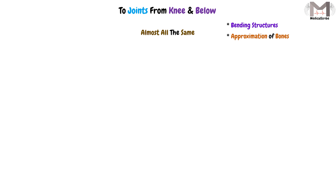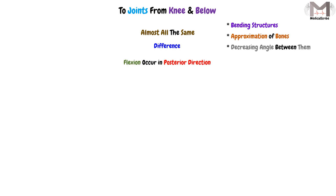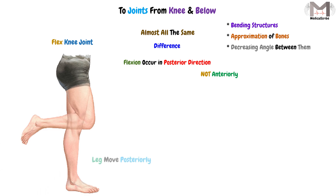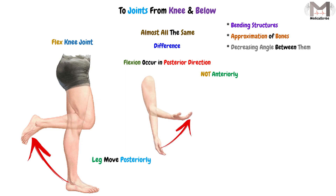In the knee and below joints, flexion involves the same concept — bending, approximation of bones, and decreasing the angle between them — but the key difference is that the movement occurs in the posterior direction, or backward. When we flex the knee joint, the leg moves posteriorly, in contrast to the elbow where the forearm moves anteriorly during flexion.